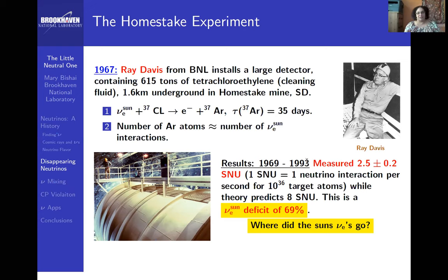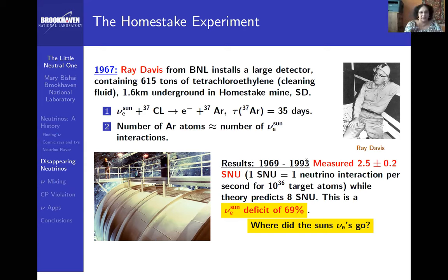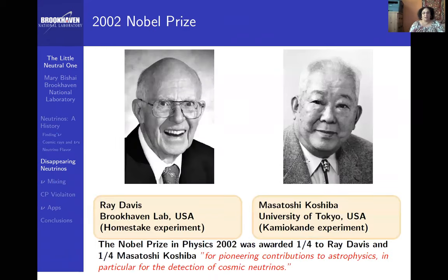In the late '80s and early '90s, this was called the solar neutrino problem: either our model of how the sun works is wrong or this experiment is wrong. For Ray Davis, for a long time, everybody said he was a chemist — nobody believed he could count individual argon atoms. So it sat there as a mystery: was something wrong in the experimental setup, or something wrong in the solar model?